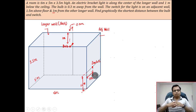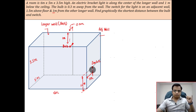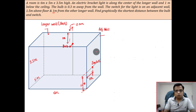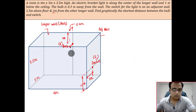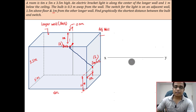To summarize: the bulb is one meter below the ceiling and 0.3 meters away from the back wall. The switch is one meter in front of the front wall and at a height of 1.5 meters from the ground on the adjacent wall. Now let's implement all of this on an orthographic projection drawing to work out the actual distance between the bulb B and the switch S.